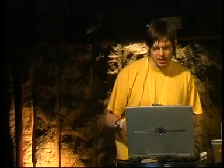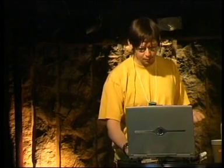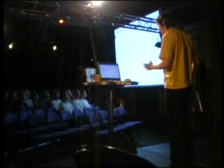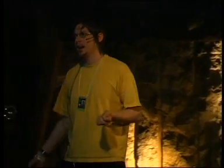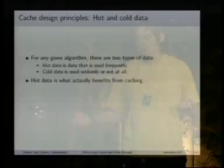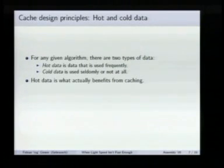There are two types of data. Hot data is data that is used frequently by an algorithm. Cold data is used seldomly or not at all. Hot data is obviously what benefits from caching, because data that's used not at all or seldomly either won't be in the cache, or if it's in the cache, won't be accessed again while it's there.